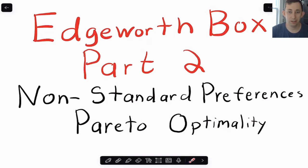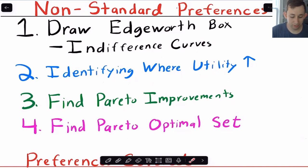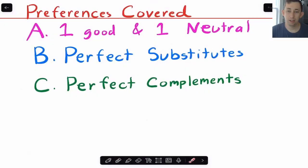Timestamps are below if you're looking for a specific type of non-standard preference. Otherwise, we're going to go through each of those non-standard preferences and draw the Edgeworth box. If you're looking for how to draw an Edgeworth box from scratch, Part 1 should be popping up in the top right — go save this video, go back to Part 1, check it out, and then come back. What we're going to do is show indifference curves, identify areas where utility is increasing for each person, find areas of Pareto improvements, and isolate the Pareto optimal points for each type of non-standard preference: one good and one neutral, perfect substitutes, and perfect complements.